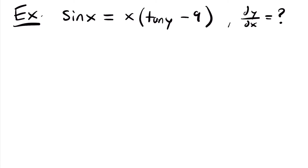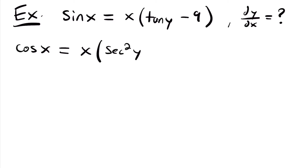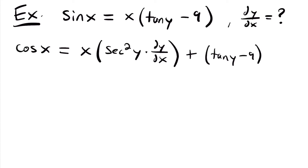The derivative of sin x is cos x. On the right side we have x times the quantity tangent y minus 9, which is a product rule. Our first function is x and the second function is the quantity tangent y minus 9. Following the product rule: first function x times the derivative of tangent y, which is secant squared y, and since we took a derivative with respect to x we multiply by dy/dx. The derivative of negative 9 is 0. Then we add the original second function tangent y minus 9 times the derivative of x, which is 1.